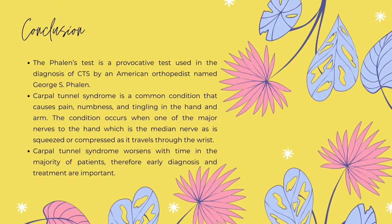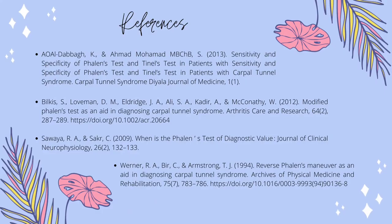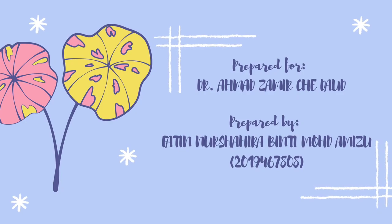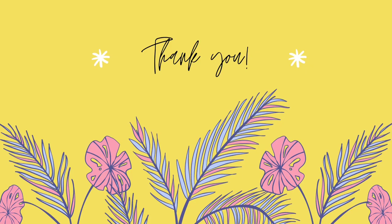To conclude, the Valen test is a provocative test used in the diagnosis of CTS, developed by an American orthopedist named George Phalen. CTS is a common condition that causes pain, numbness and tingling in the hand and arm, occurring when the median nerve is squeezed or compressed as it travels through the wrist. CTS worsens with time in the majority of patients; therefore, early diagnosis and treatment are important. That's all from me — thank you for your time and attention.